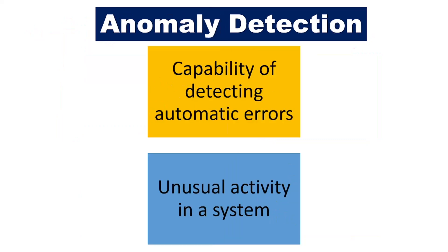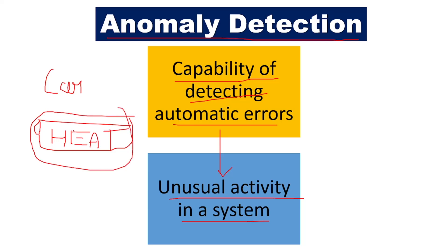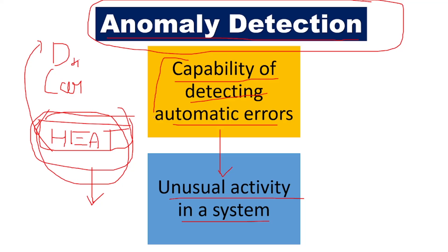Machine learning is important. Second is Anomaly Detection. What is anomaly detection? It is the capability of detecting automatic errors — that is, unusual activity in a system. For example, you are driving a car and suddenly the engine gets heated up. The Artificial Intelligence should immediately give a signal to the driver that the engine is getting heated up and the car needs some rest. When something unusual is going on in the engine, the anomaly detection will detect the error and give a message to the driver that there is a problem in the engine.